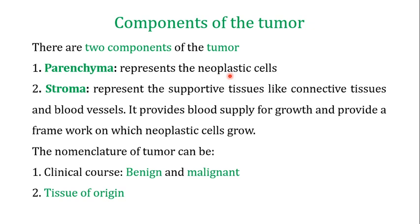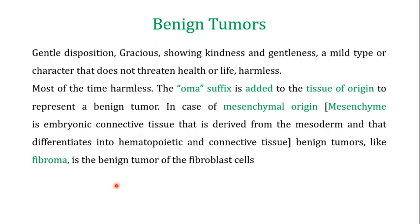An important concept to understand about tumors is nomenclature, because it helps in differentiating the two types of tumor: benign and malignant. When you talk about tumor nomenclature, tumors are divided into benign and malignant on the basis of clinical course, and they are also given different names based on the tissue of origin.